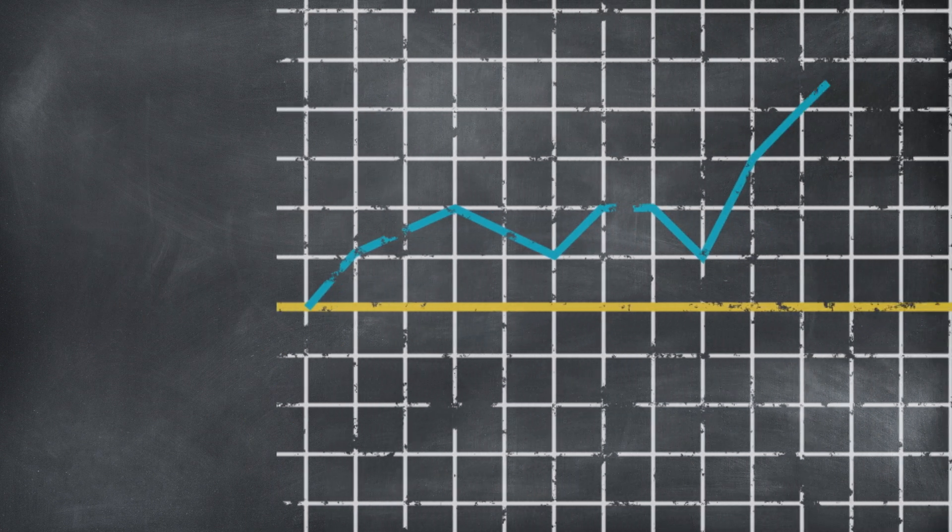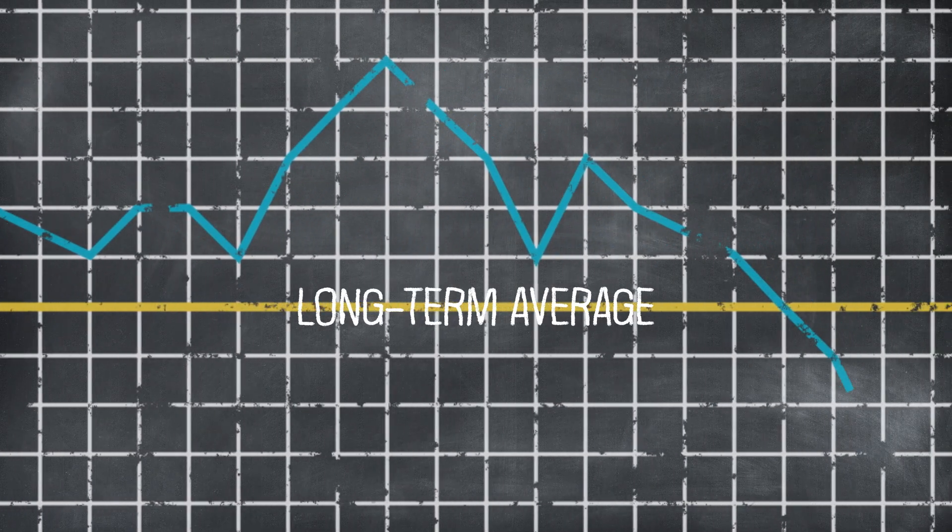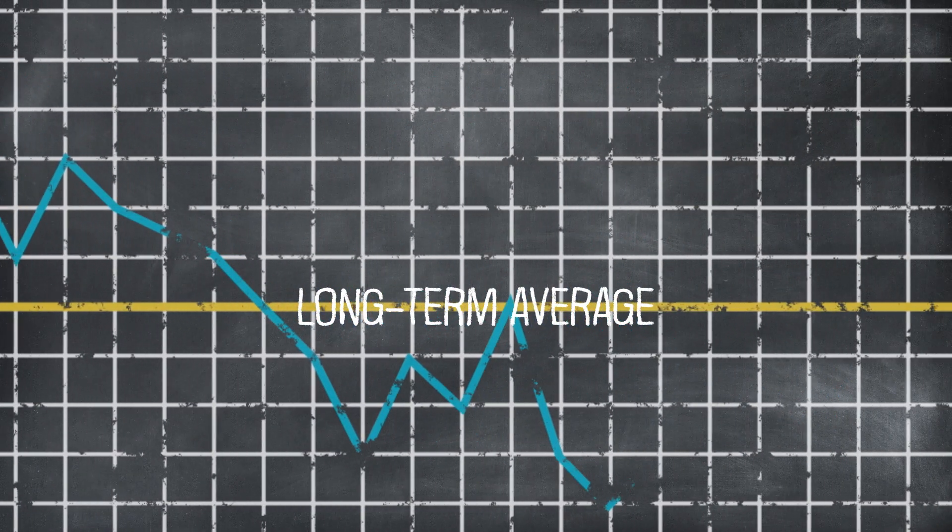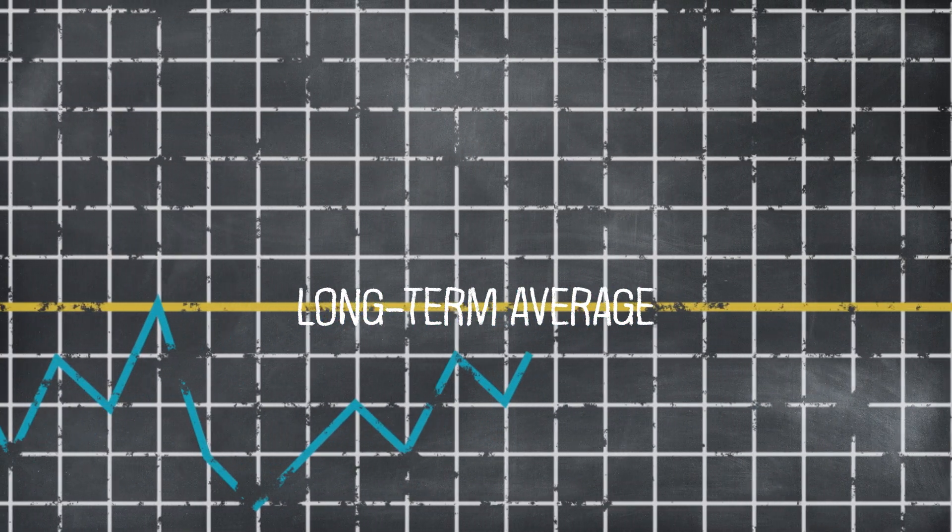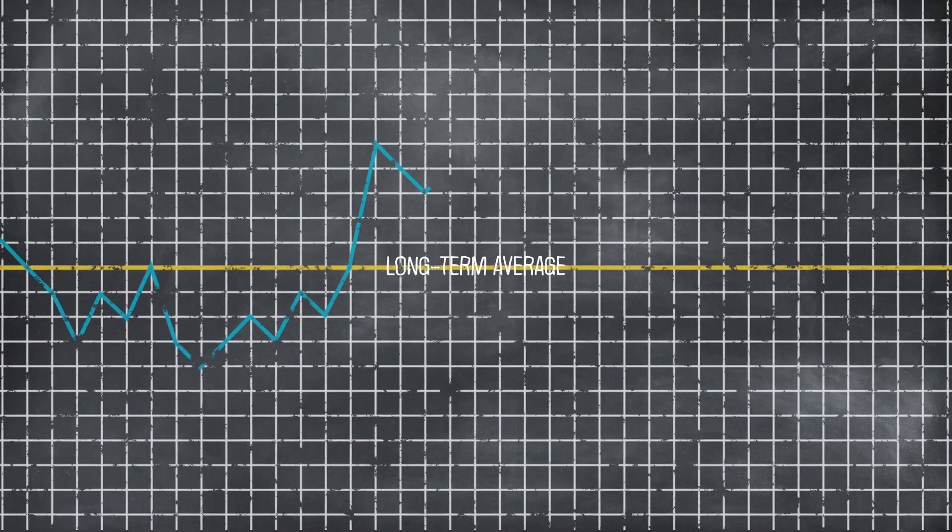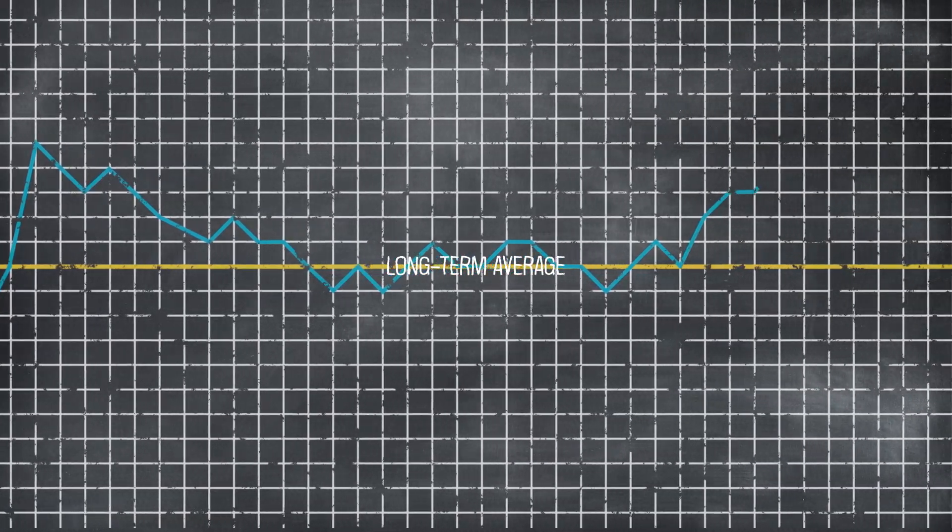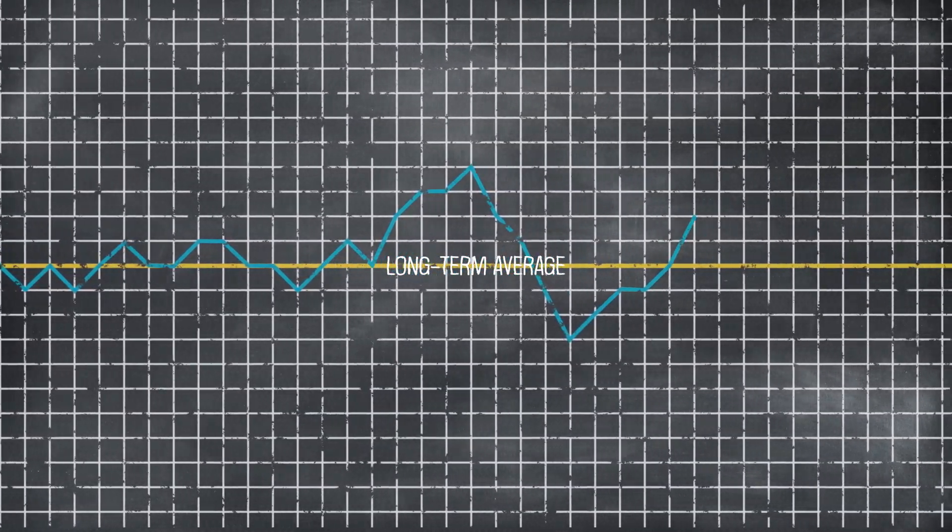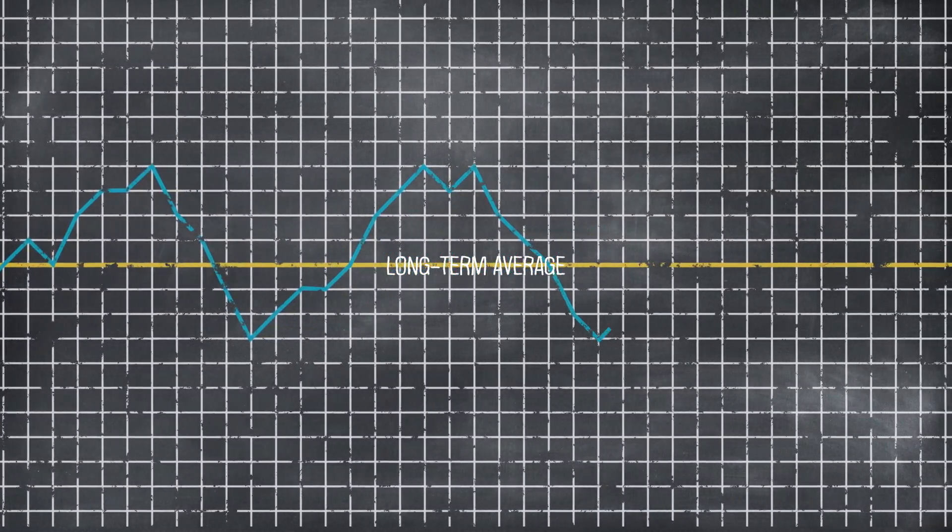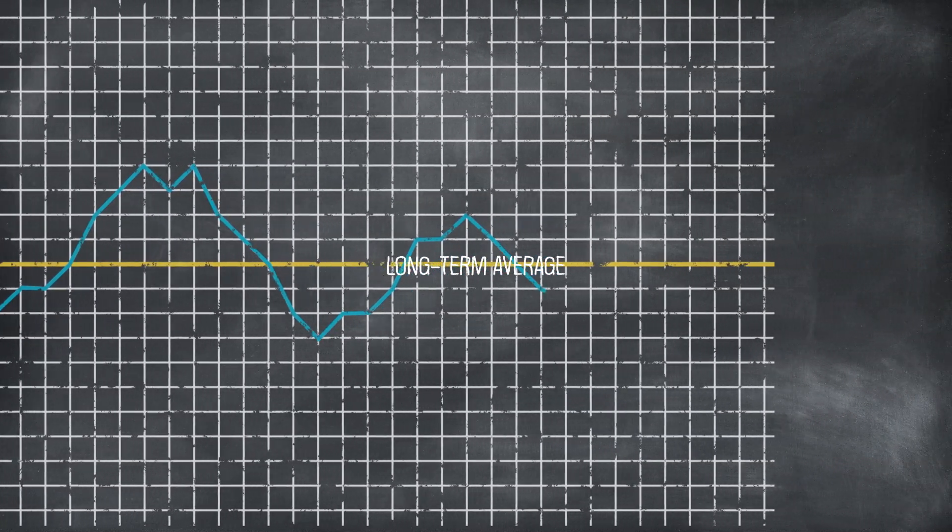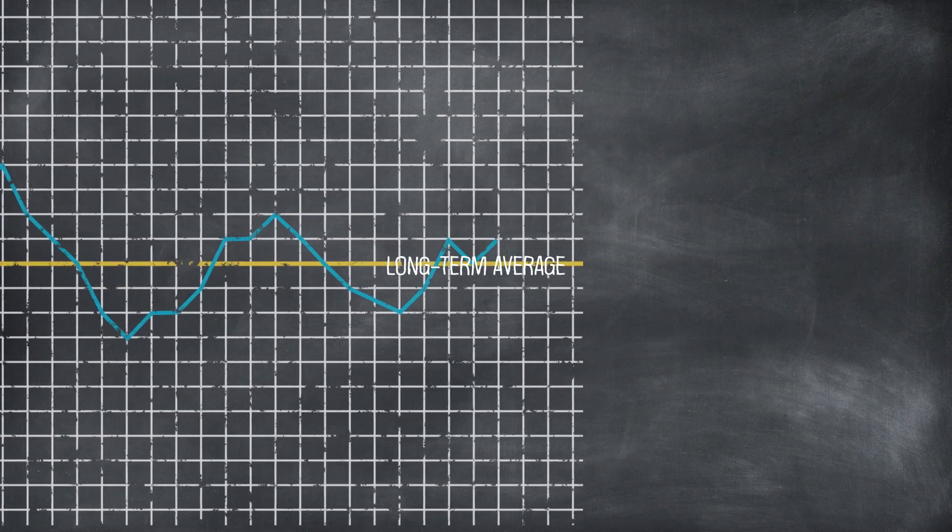Investments can produce returns that are very much higher or lower than their long-term average for extended periods. But when you zoom out and look at the bigger picture, you'll see that they eventually tend to move back towards their average. Outperformance is followed by underperformance and vice versa.